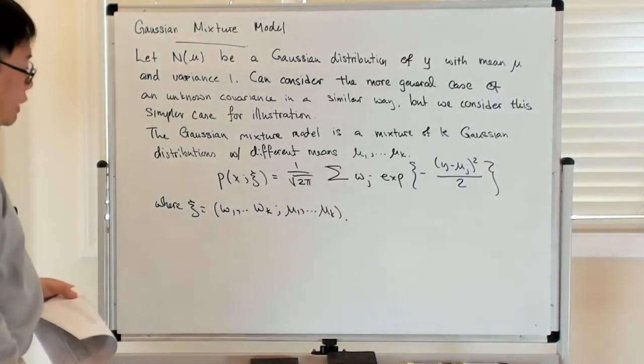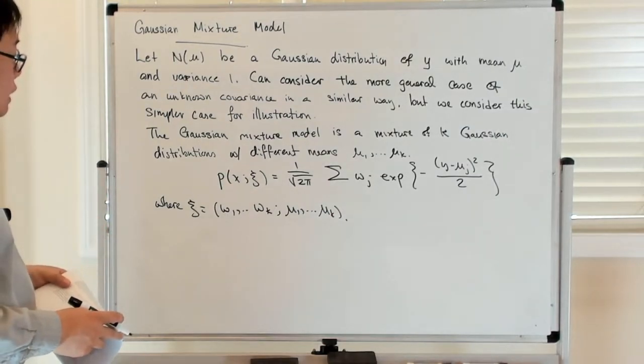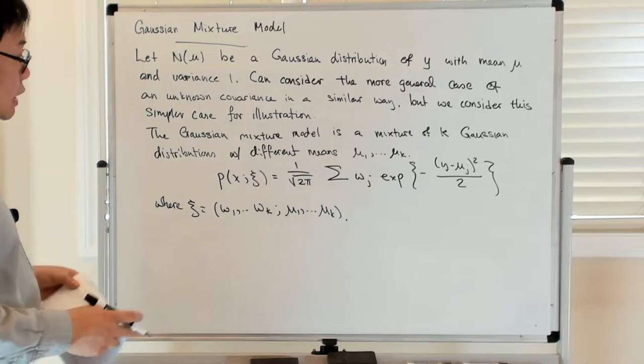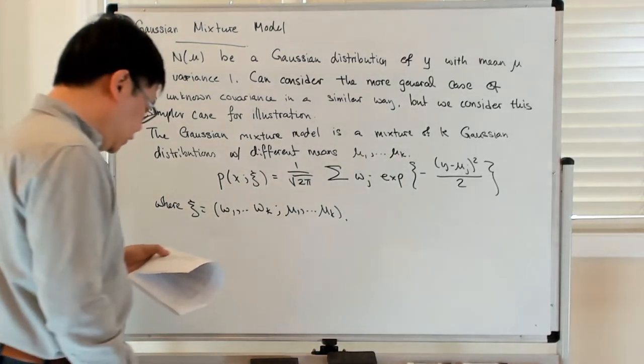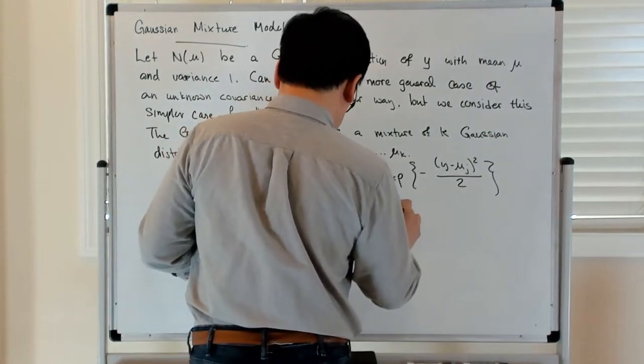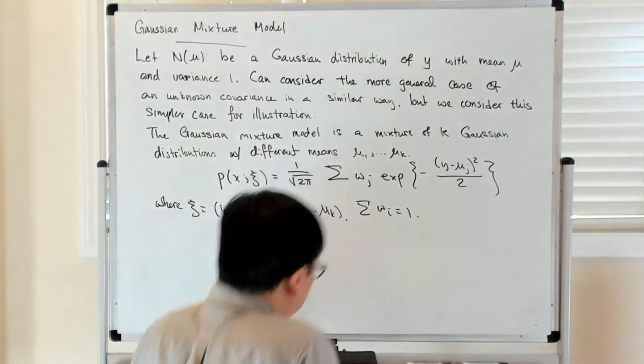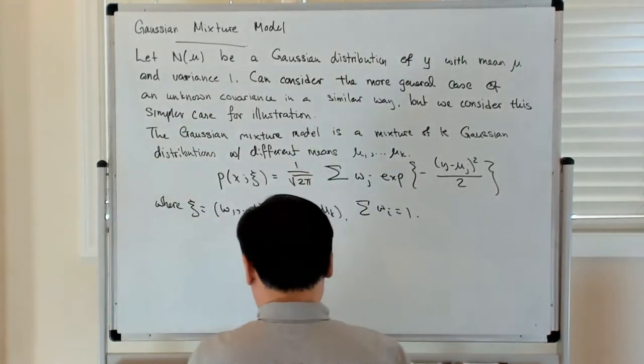And there's a constraint on the weights, so we're looking at convex combinations of these Gaussian distributions. So the weights have to sum up to 1, and these are the unknown parameters to be estimated.